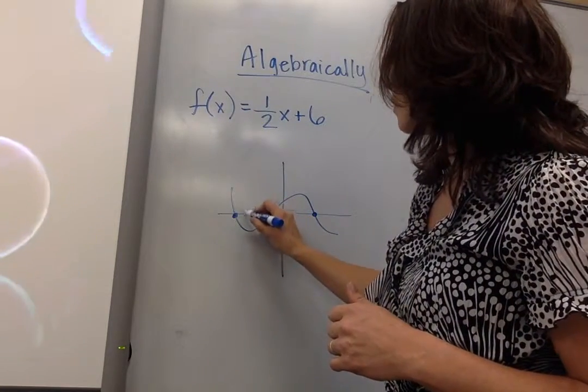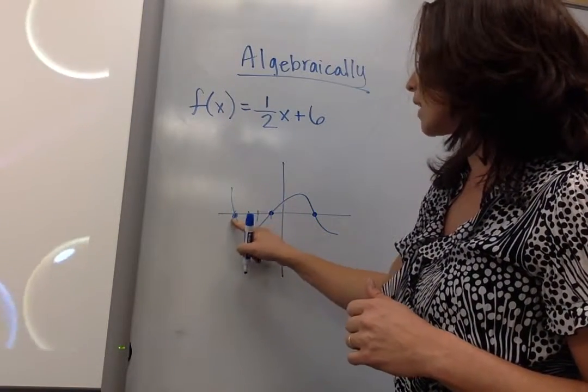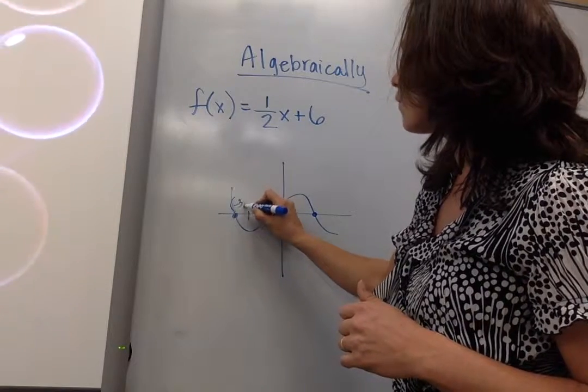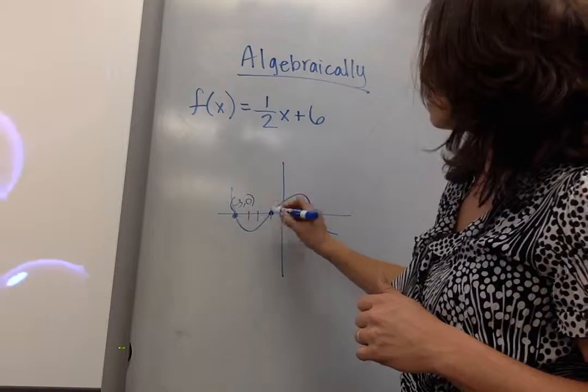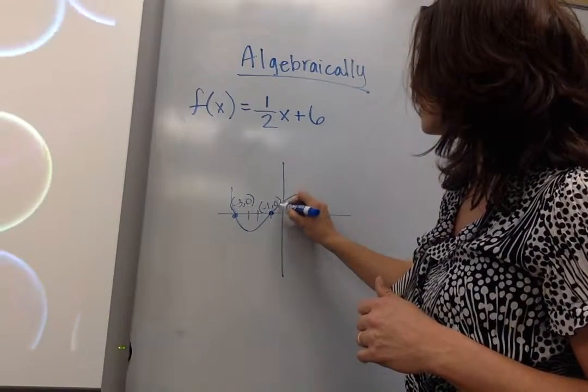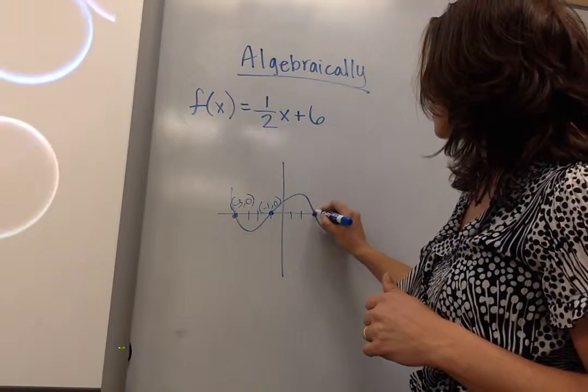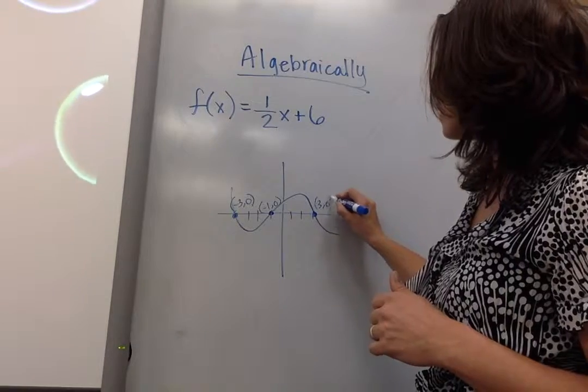My value of x is negative 1, negative 2, negative 3, and my y value is 0. At this point, I have negative 1, 0. At this point here, I have 3, 0.